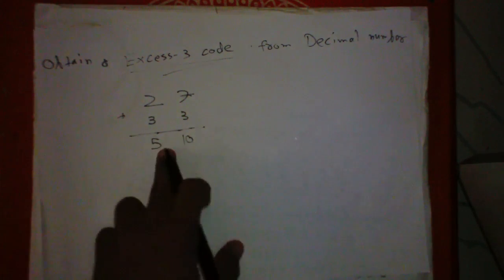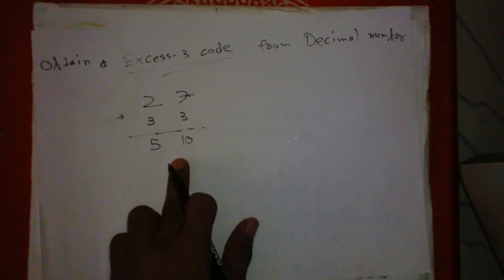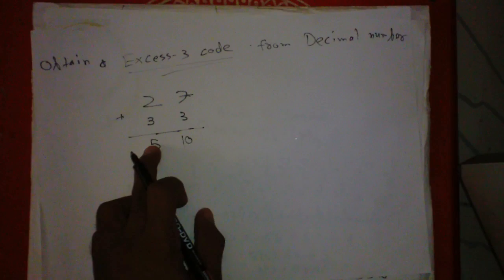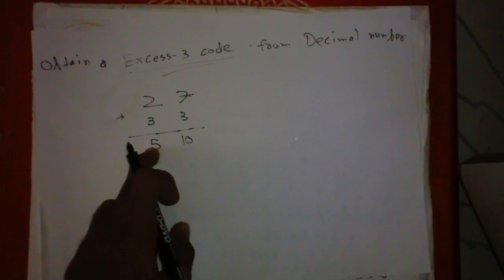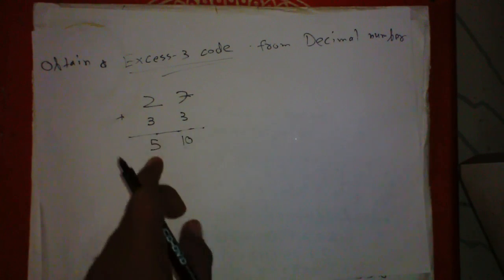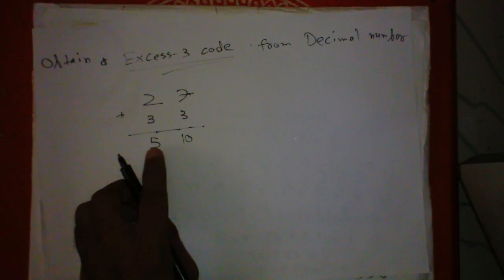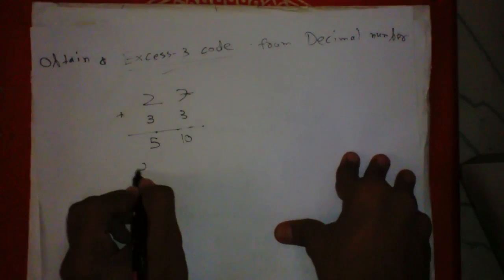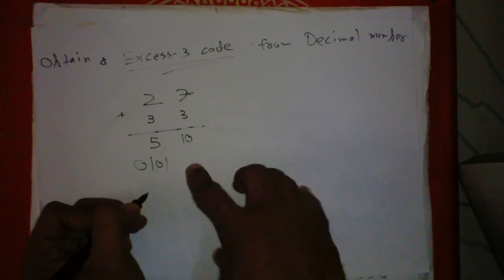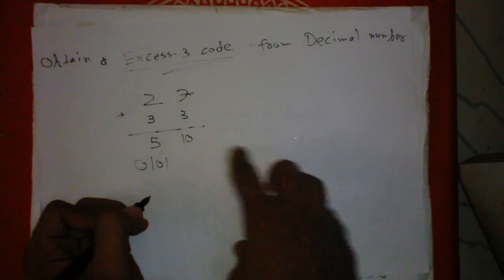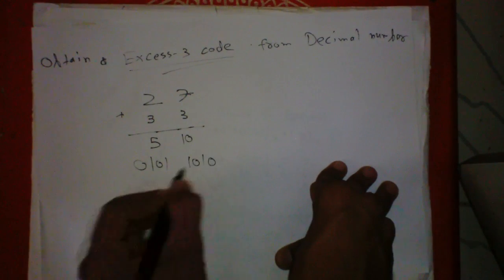So this is not actually Excess-3 code yet. Excess-3 code will be the conversion of these numbers into binary code. So binary code of 5 is 0101, and binary code of 10 is 1010.